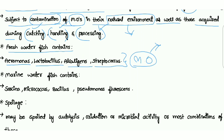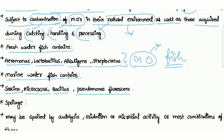Marine water fish — those which live in marine water such as seas and oceans — contain Sarcina, Micrococcus, Bacillus, and Pseudomonas fluorescens. These microorganisms are present in marine water fish.